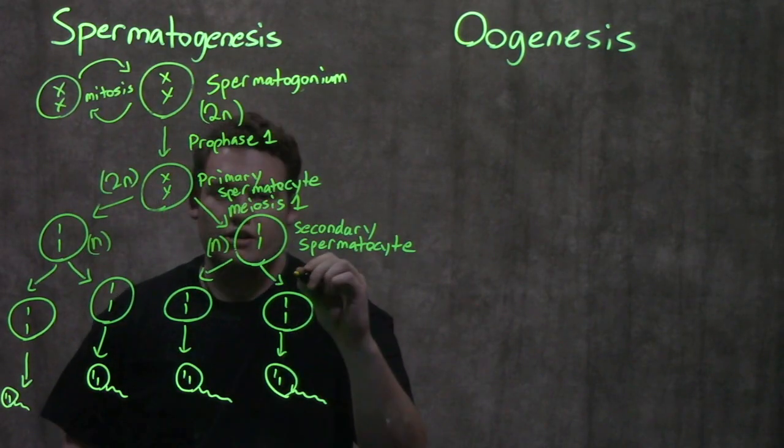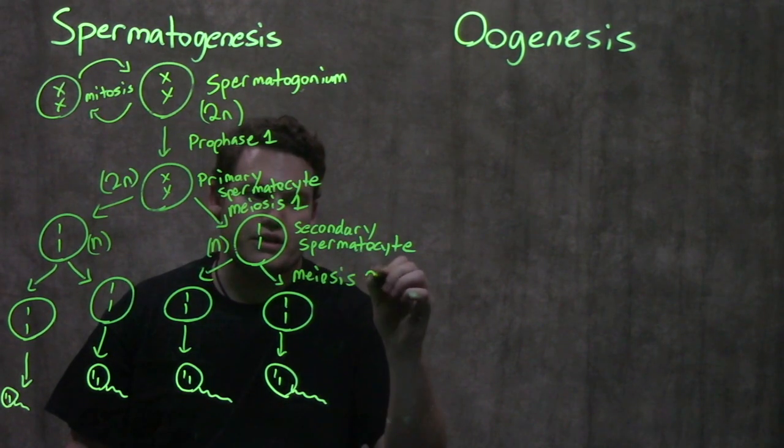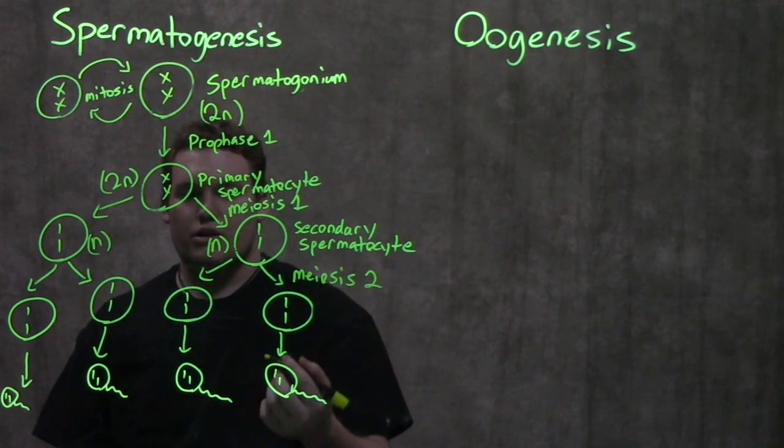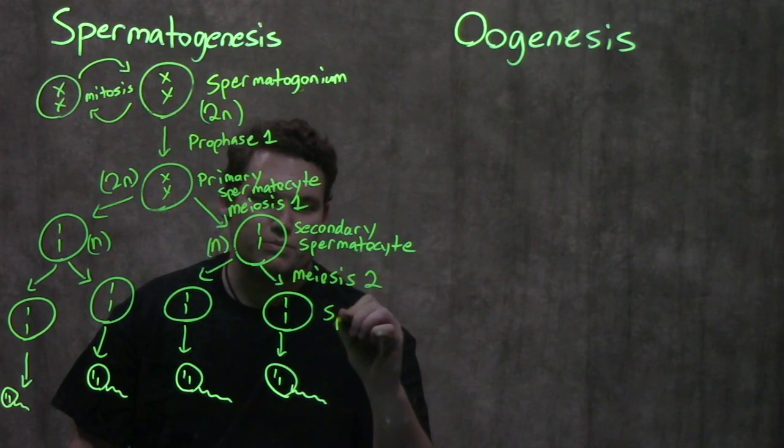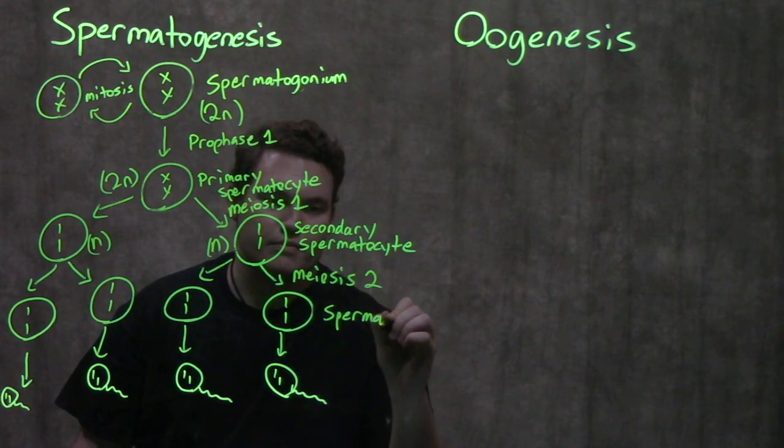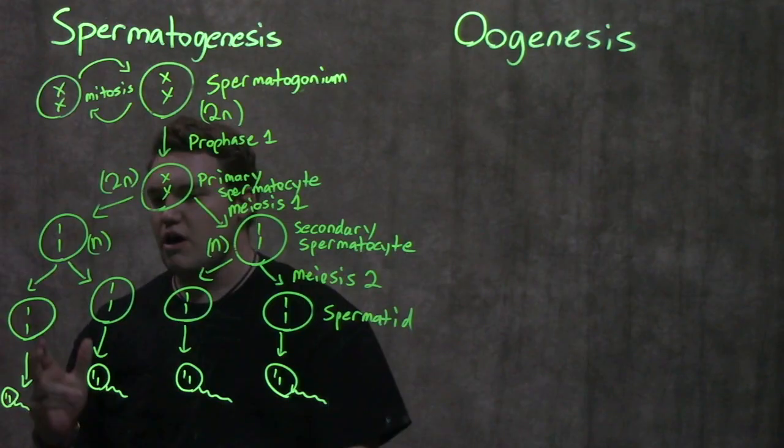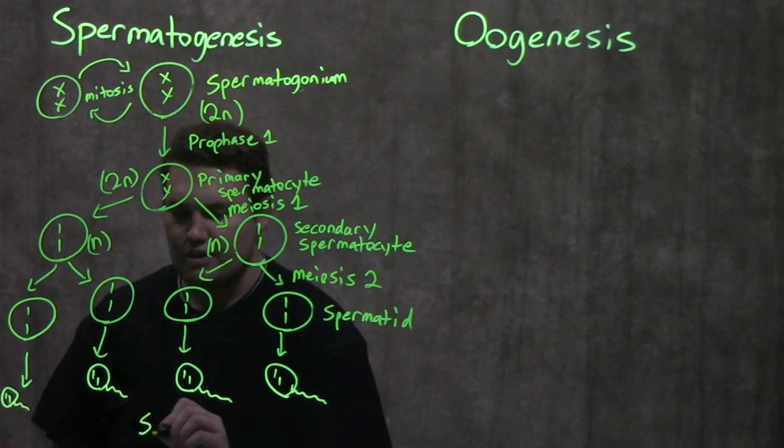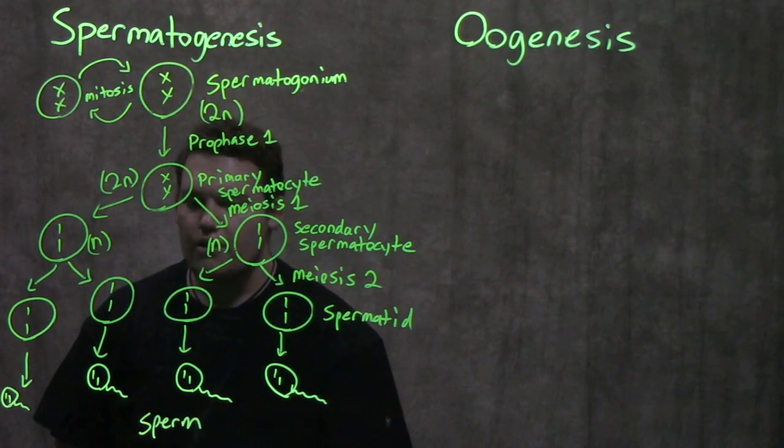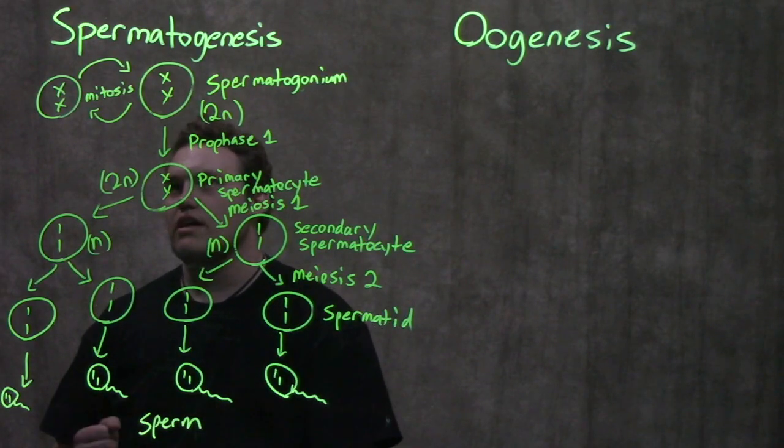The second division, meiosis 2, is the equational division like we learned. This produces spermatids. There isn't a whole lot to know between the spermatid and the mature sperm, other than it's a maturation process. Don't get too worried about the specifics there—that's outside the scope of this genetics class.